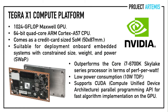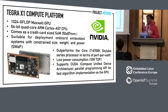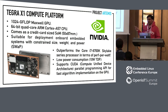The Tegra X1 compute platform has a really nice embedded GPU, a quad-core ARM Cortex CPU, and is almost the size of a phone. It outperforms the i7 Skylake series in performance per watt. It supports the CUDA API — Compute Unified Device Architecture — for fast GPU algorithm implementation, which I found the easiest GPU programming approach compared to alternatives like OpenCL for Intel platforms.